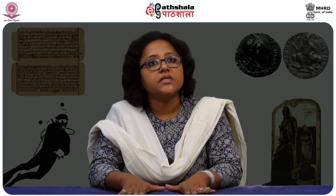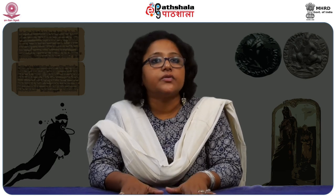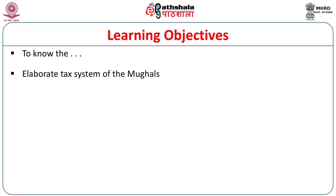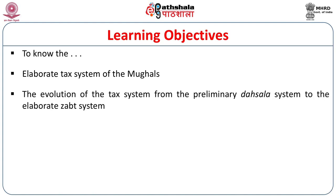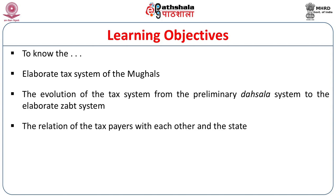In our earlier modules we have discussed how agriculture flourished during the Mughal period. Now in this module we are going to discuss how the tax was appropriated, or rather the surplus was appropriated in the form of tax by the Mughal rulers. Our objective would be to learn the elaborate tax system of the Mughals, the evolution of the tax system from the preliminary Dasala system to the elaborate Zabt system, and the relation of the taxpayers with each other and the state.